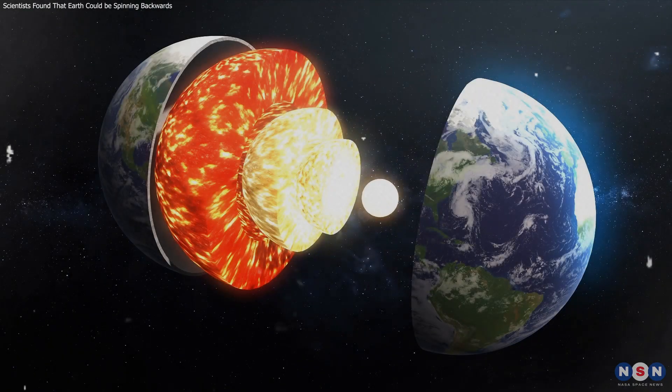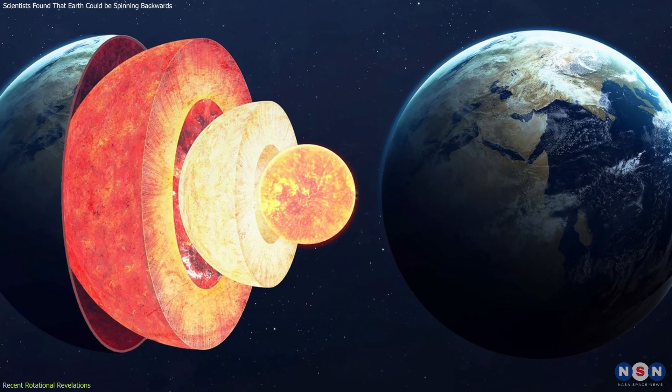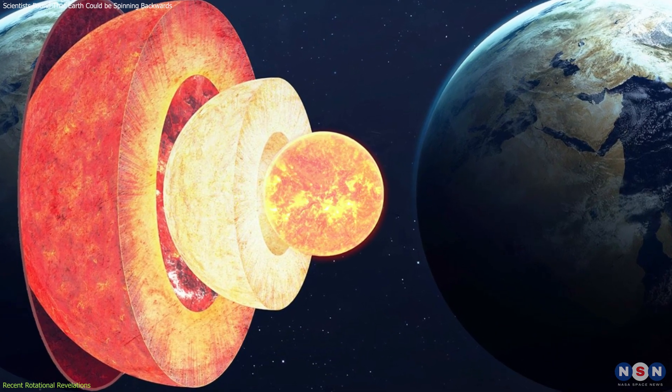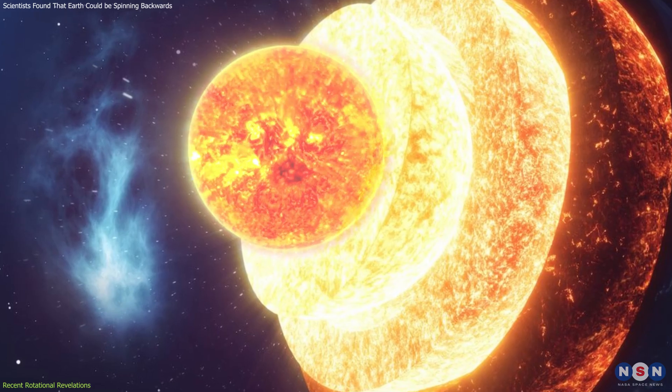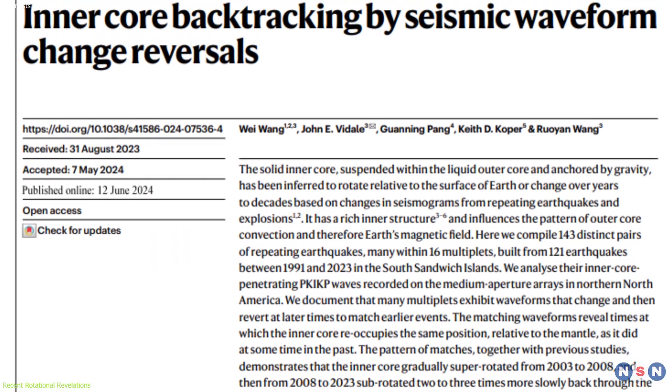The Earth's inner core, a solid sphere composed mainly of iron and nickel, rotates independently of the Earth's mantle. It behaves like a planet within a planet. This phenomenon has been known for some time, but recent discoveries have added a fascinating new chapter to our understanding.